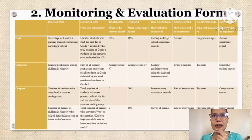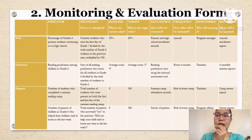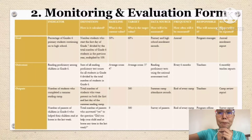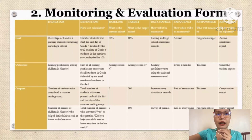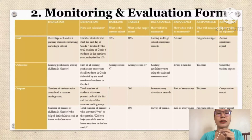So let's start with the indicator and the goal. Our goal is the percentage of Grade 6 primary students continuing on to high school. Kukuha namin kung ilan ba yung lahat na magko-continue sa high school. And then yung outcomes is reading proficiency among children in Grade 6. And then the output is the number of students who completed a summer reading camp — ito yung mga activities na pwedeng gawin to make them proficient in reading. And then yung number of parents of children in Grade 6 who helped their children read at home in the last week — because as stakeholders, we need their help. Hindi naman kasi natin talaga matututukan lahat ng bata, so as parents, they have to do their part.